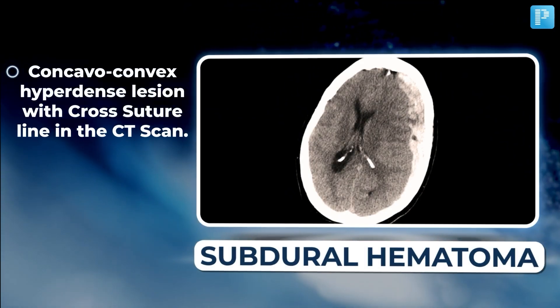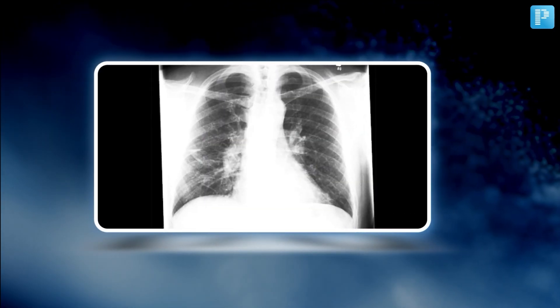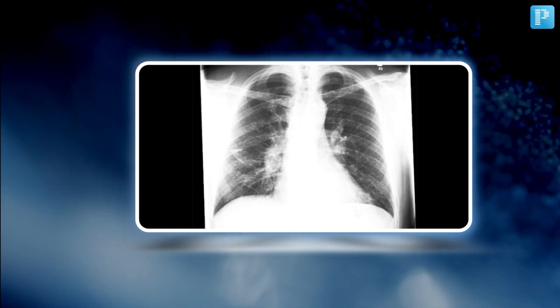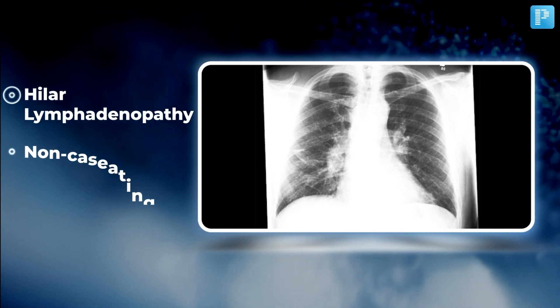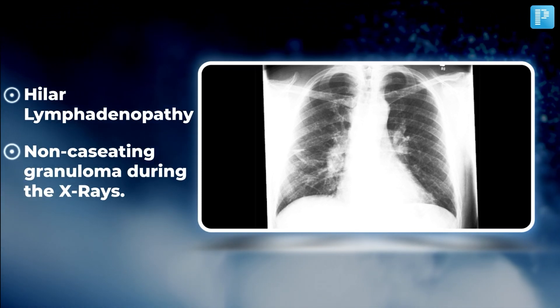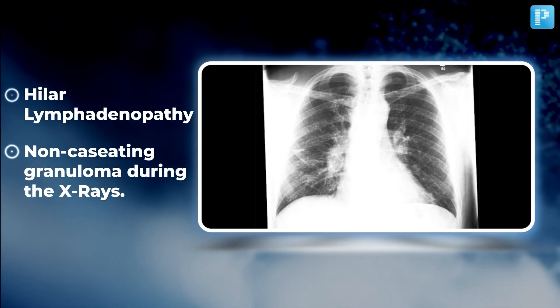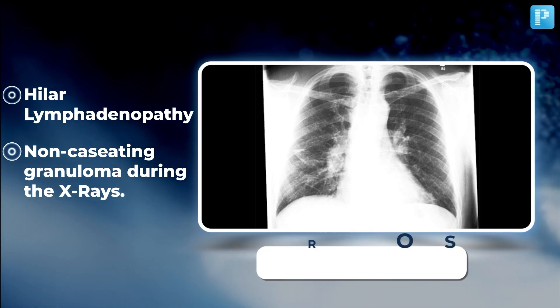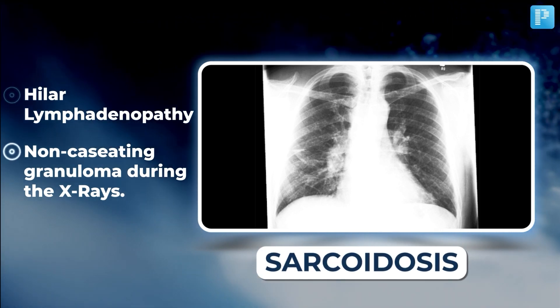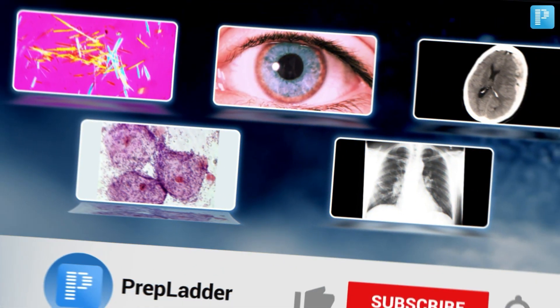Let's look at the final image from this video, which shows hilar lymphadenopathy and non-caseating granuloma on X-rays. Can you decode which disease it is? It's sarcoidosis.